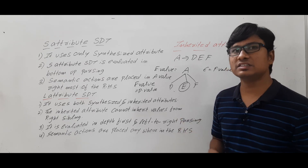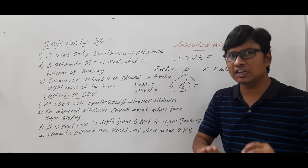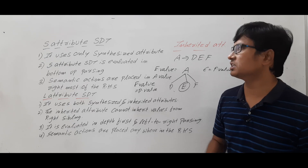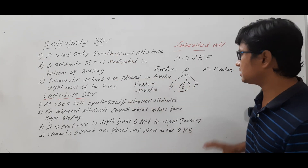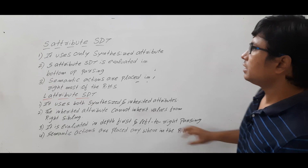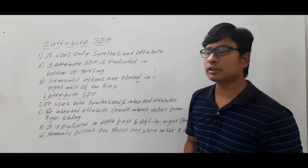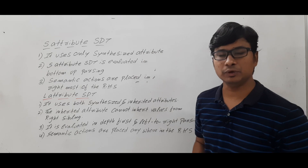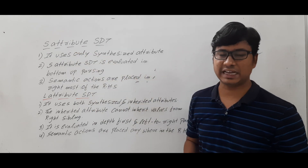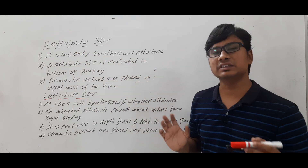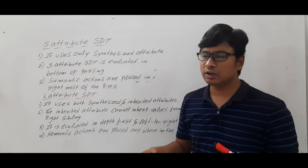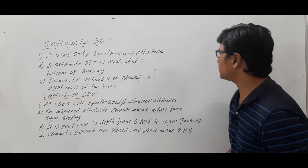I hope you understood the difference between synthesized attribute and inherited attribute. Feel free to ask in the comment section if you have doubts. Now let me discuss about S-attribute SDT. The first point: S-attribute SDT uses only synthesized attributes. We have two types of attributes — synthesized and inherited — but S-attribute SDT uses only synthesized attributes. S-attribute SDT is evaluated in bottom-up parsing.